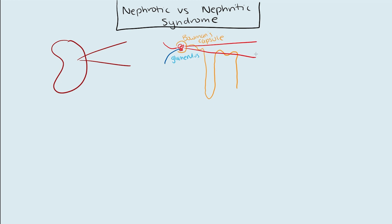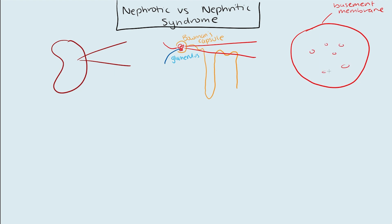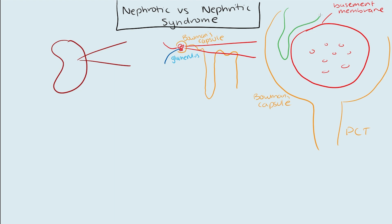If we zoom into the individual glomerulus by itself, we're looking at one individual capillary inside the glomerulus. First we have the basement membrane, which is essentially the capillary wall, and inside here you have a bunch of little red blood cells swimming around. Surrounding this area, you have Bowman's capsule draining into your proximal convoluted tubule. On the outside, you're going to have these really big cells called podocytes, which have little foot processes surrounding the whole basement membrane.